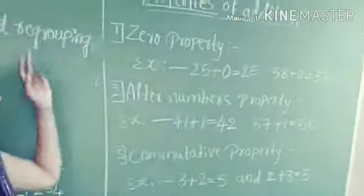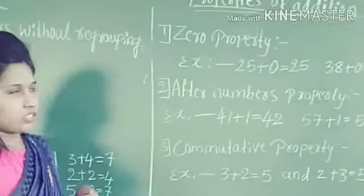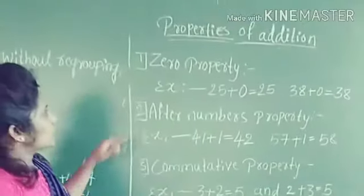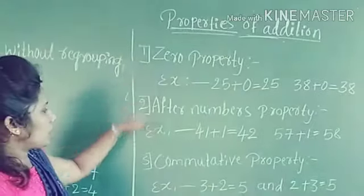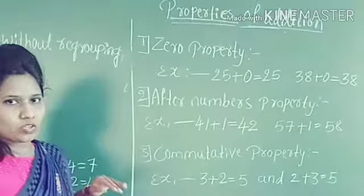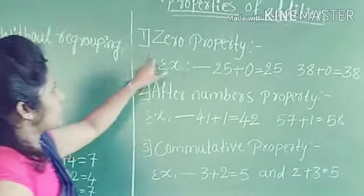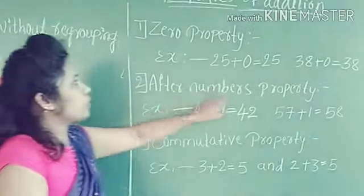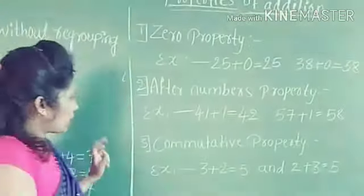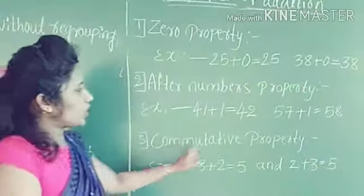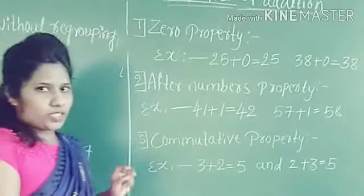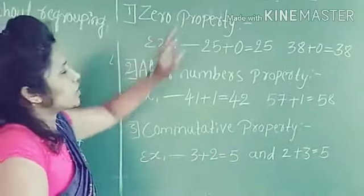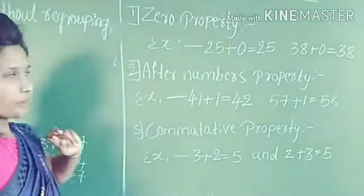Now we will learn about the properties of addition. Children, in addition there are 3 properties: the first one is the zero property, the second is the after number property, and the third is the commutative property. Let's learn about the zero property.